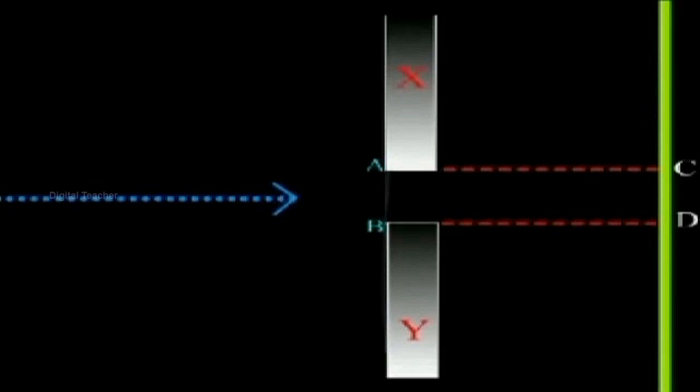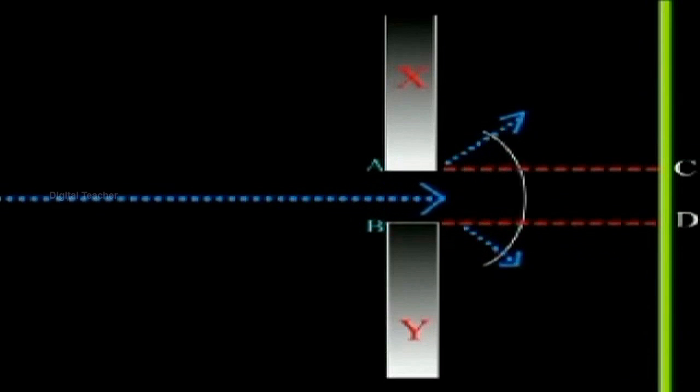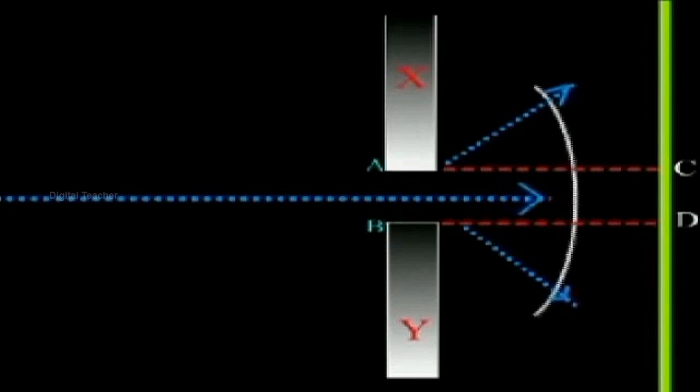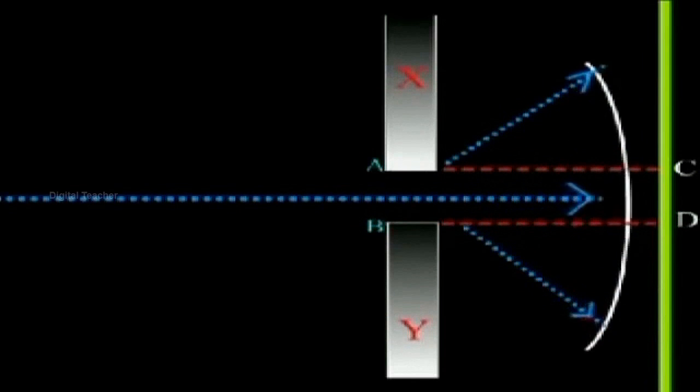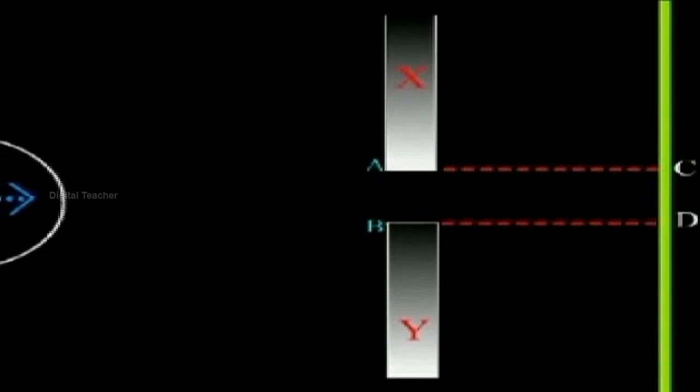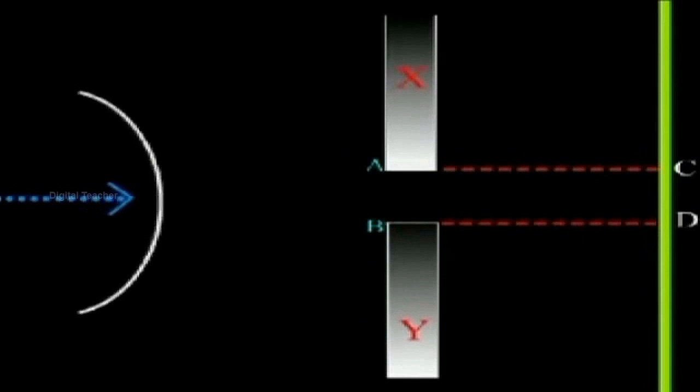The waves emerging from AB deviate from their original direction of propagation along P and travel along the directions Q and R. The formation of circular wave fronts and their propagation in a direction different from the original direction is because of bending of the waves.